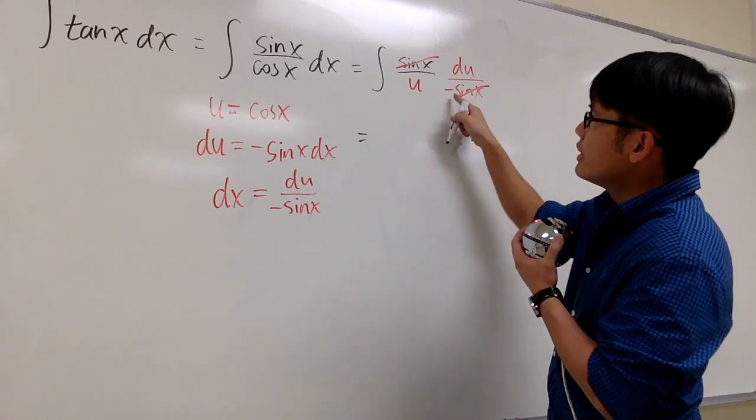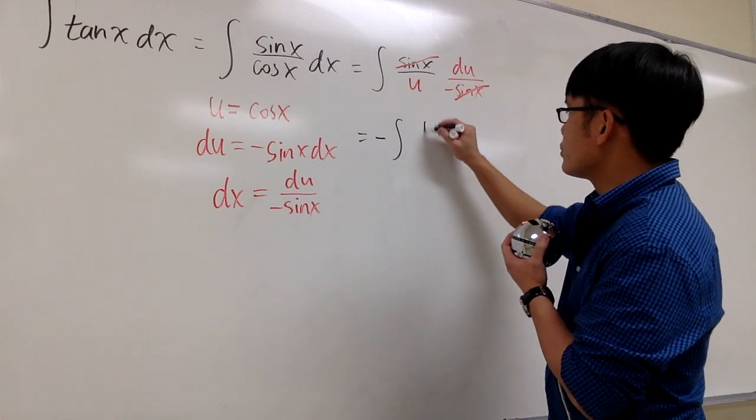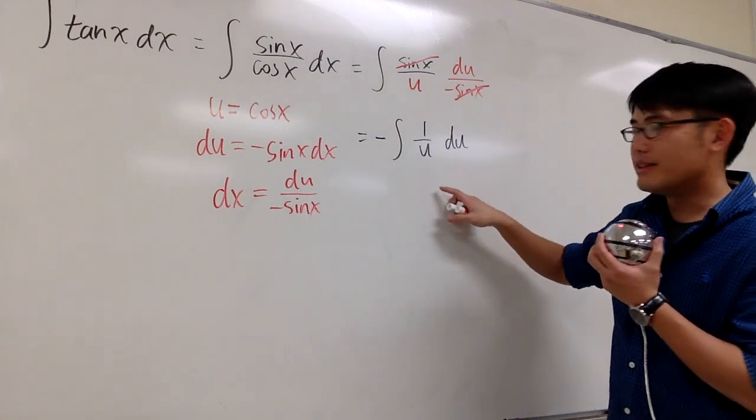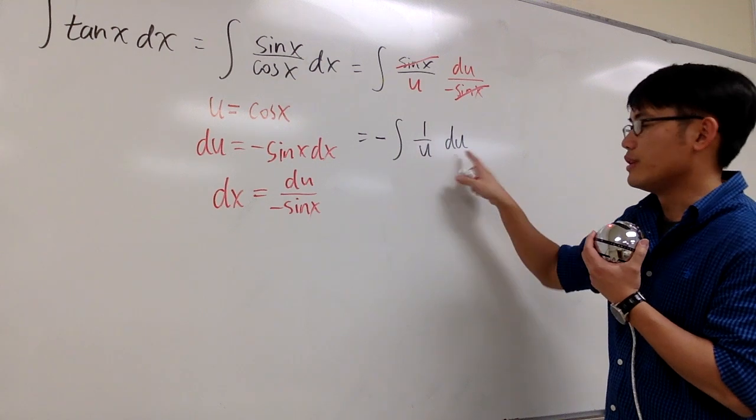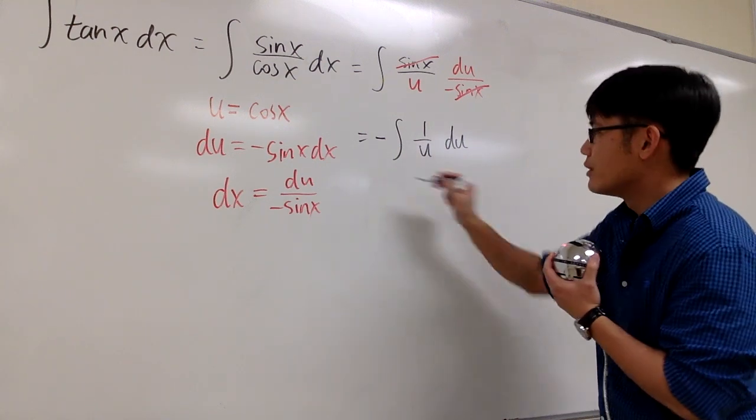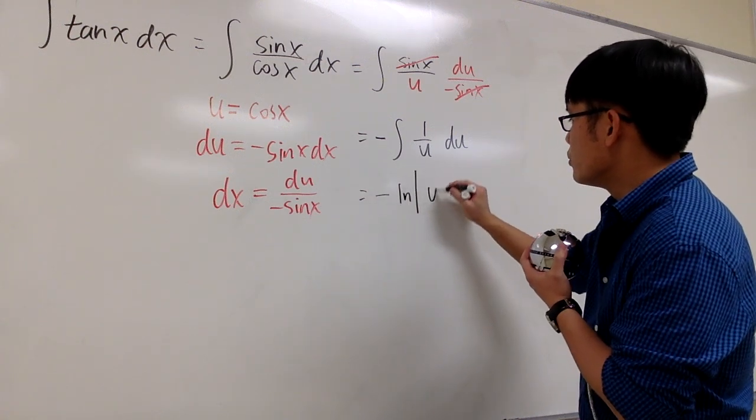We have a negative right here. Let's take the negative on the outside. So negative integral, here we just have 1 over u du. And now the matter is, what's the integral of 1 over u in the u world? The answer for that is ln absolute value of u. So we get negative ln absolute value of u.